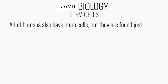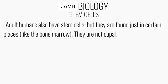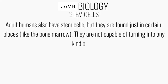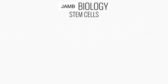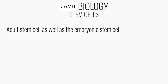Adult stem cells are found only in certain places, like the bone marrow, and they are not capable of turning into any kind of cell — they are more specific. For example, blood cells actually come from stem cells in your bone marrow.